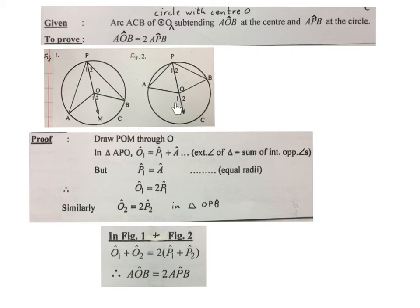So, the angle here at O1 is the same as P1 plus A. P1 is the same as A because of the radii again. Similarly, the O2 is equal to 2 times P2.